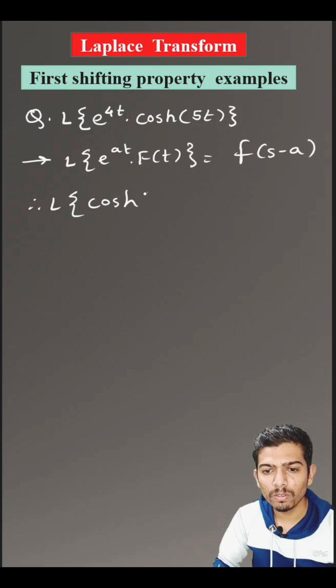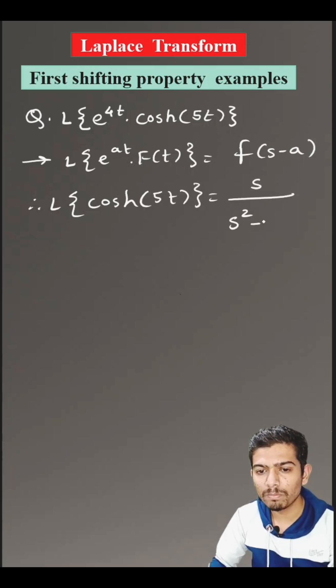Laplace transform of hyperbolic cos of 5 t is equals to s divided by s square minus 25. So, this is small f of s.